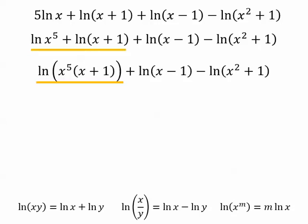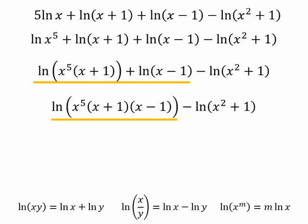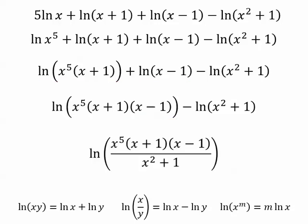Moving from left to right, we combine the first two terms using the rule that the sum of the logs is the log of the product. Then, use the rule that the difference of the logs is the log of the quotient. And you're done.